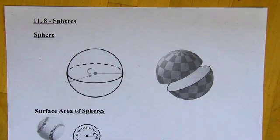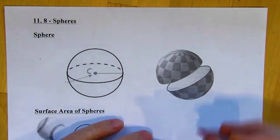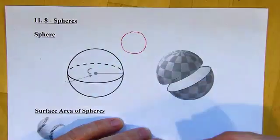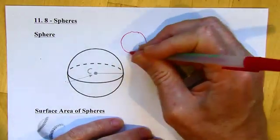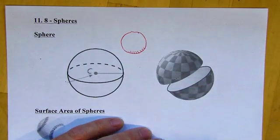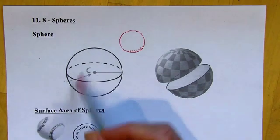Okay, 11.8 is called spheres. So a sphere, well, I think you know what a sphere is. If I were to draw a sphere, it looks a lot like a circle. So what I'll often do is just shade it a little bit so it looks three-dimensional. And that's my way of telling you that that's supposed to be a sphere and not a circle. Okay, so here's a sphere.